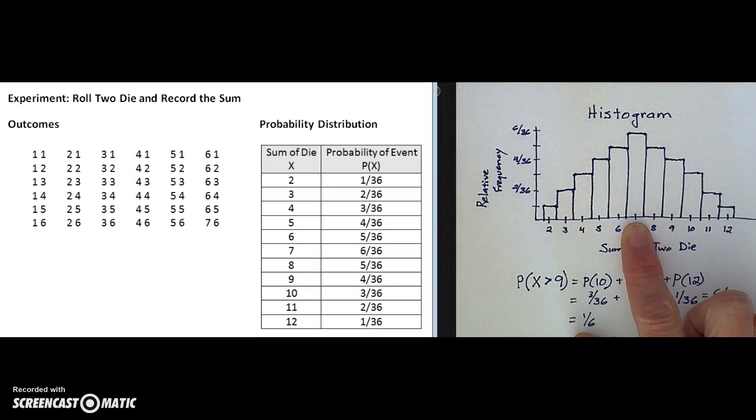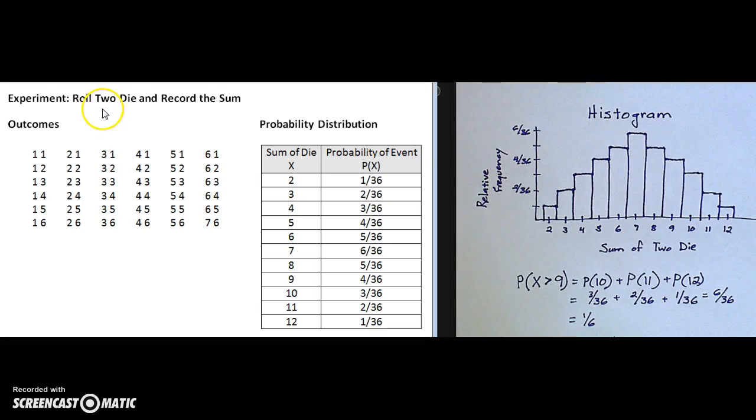Histograms are a great visual representation of relative frequencies or probabilities of events. We're going to take a look at a finite sample space for the experiment of rolling two dice. I'm going to roll two dice and record the sum on those dice.